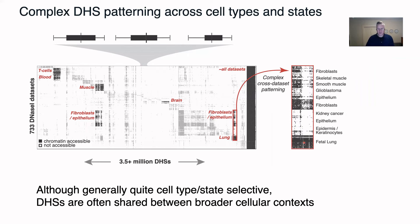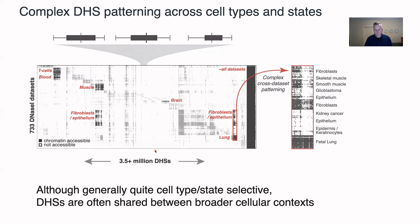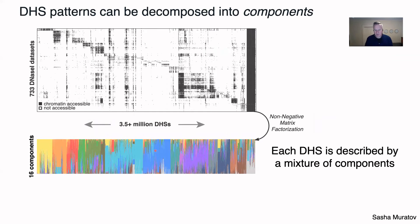In order to categorize all these accessible elements and work towards a pragmatic annotation, we decided that regular hierarchical clustering would not be the way to do this. Instead, we realized we should regard this matrix and decompose it into separate components. That's what we've done using non-negative matrix factorization, which takes this matrix of three and a half million elements versus 700 datasets and summarizes it in terms of 16 components. Each component is given a single color, and each of the three and a half million DHSs is made up of either a single component or a mixture of components.